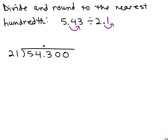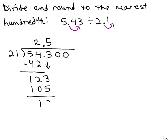21 goes into 54 twice, and down the next digit. 21 goes into 123, I think it goes five times. Five times 21 is 105, and that's 18. Remember your remainder has to be smaller than what you divided by.